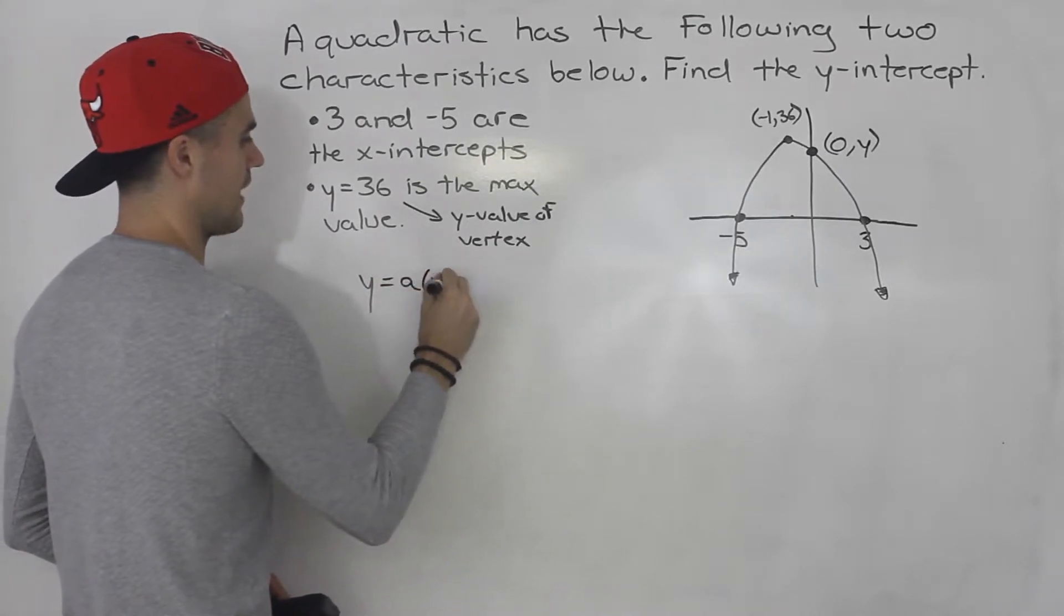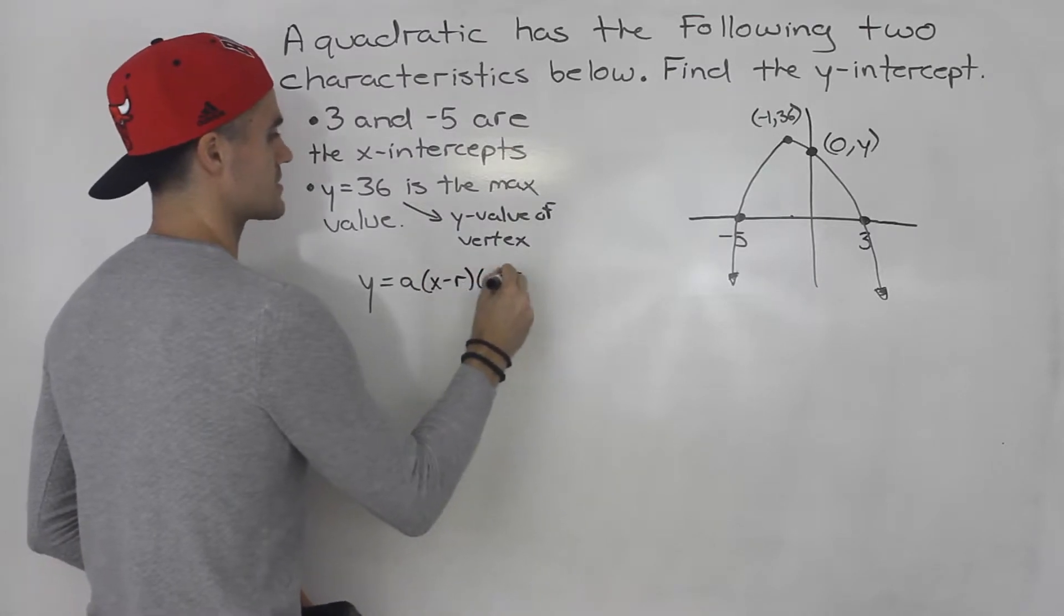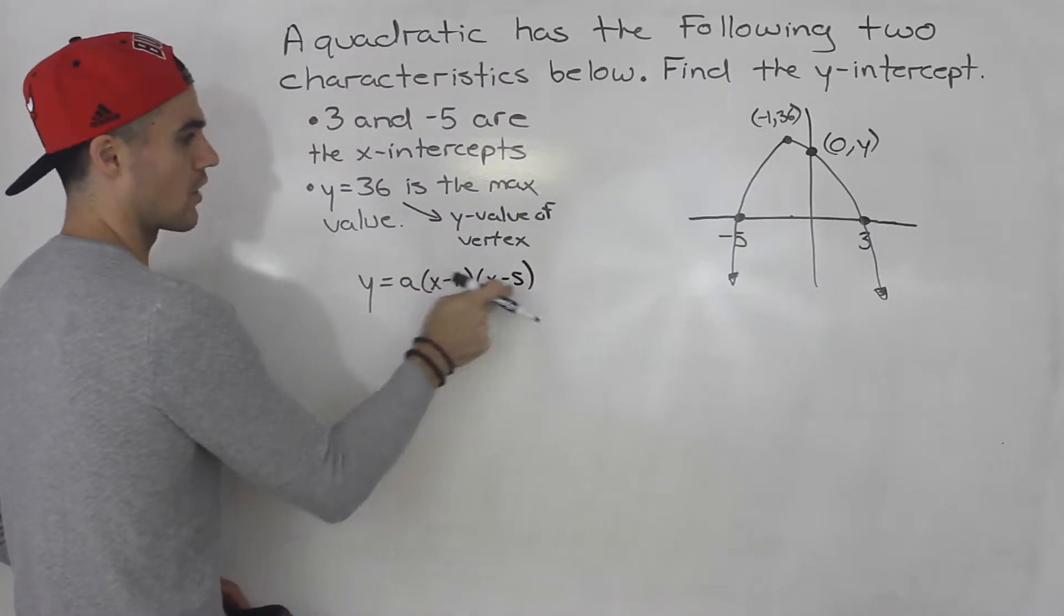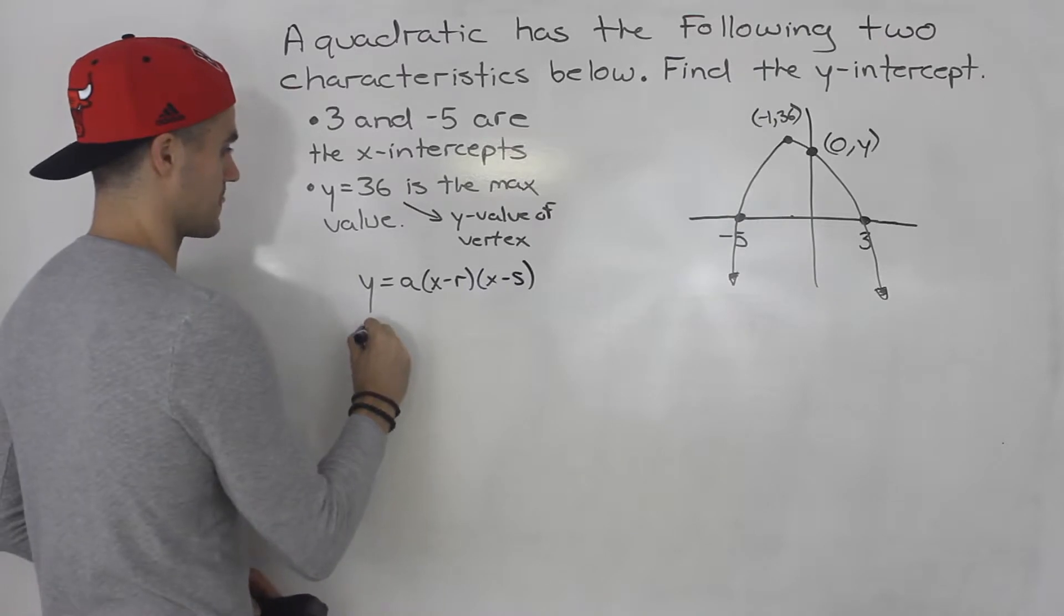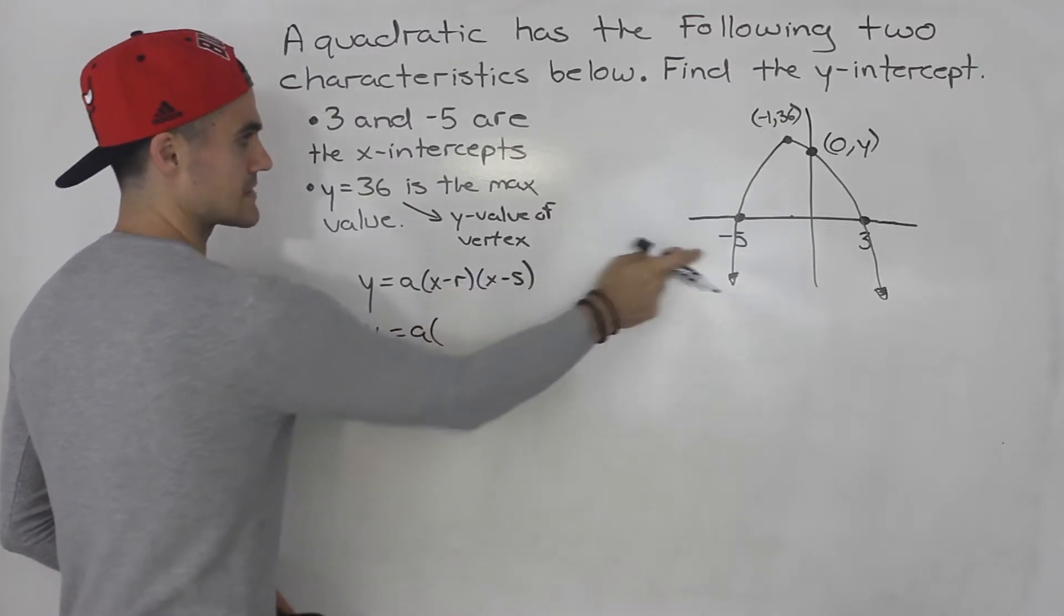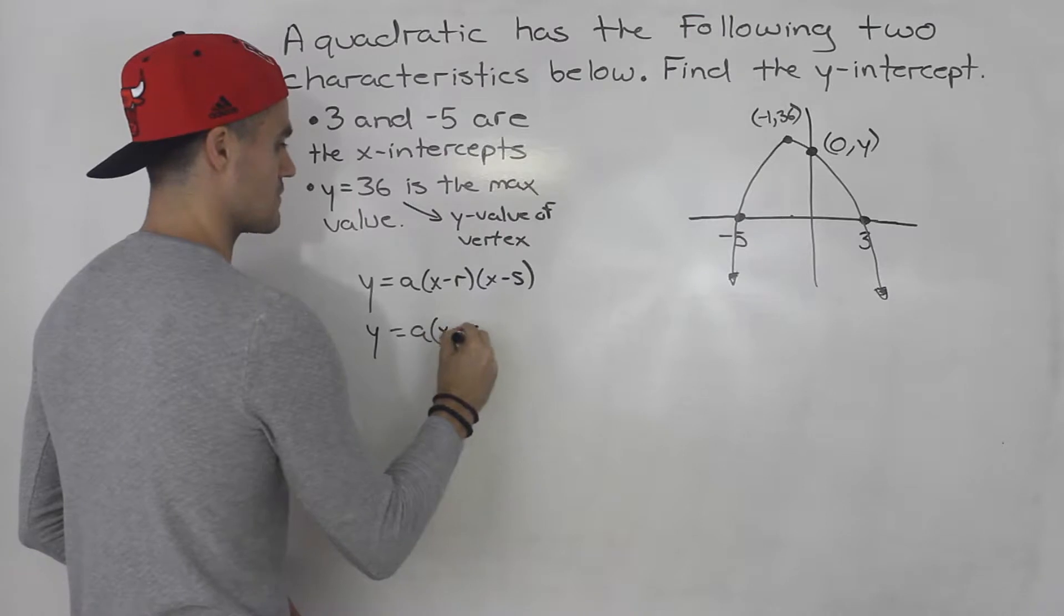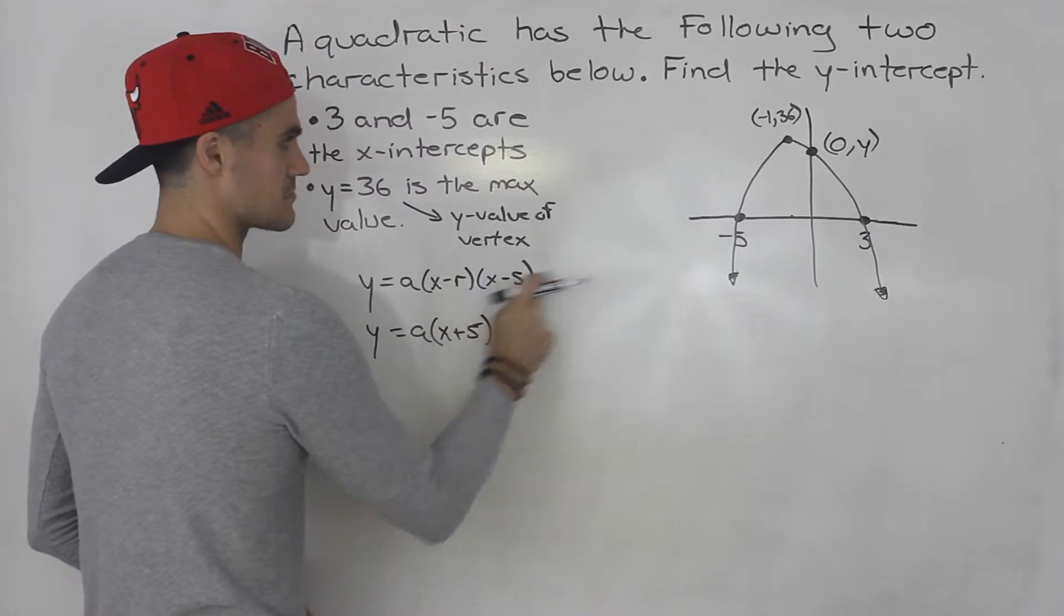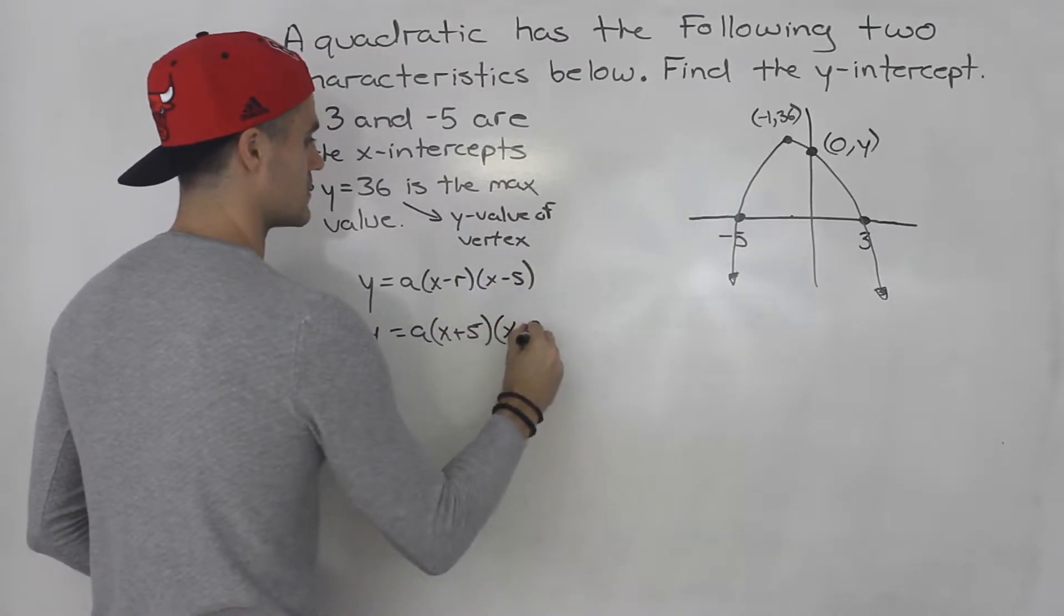So, I'm going to have a, x minus r, x minus s, right, where r and s are the x-intercepts. So, x minus negative 5 is like x plus 5, and x minus 3 is over here.